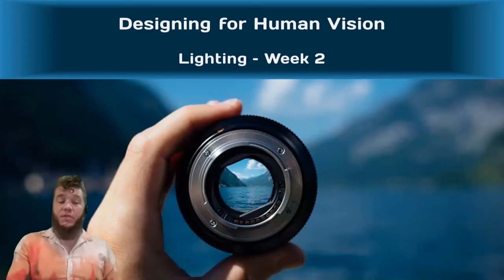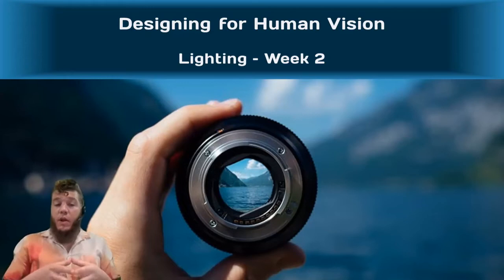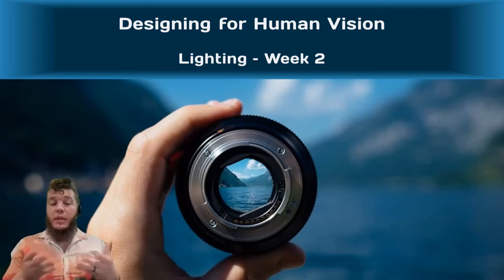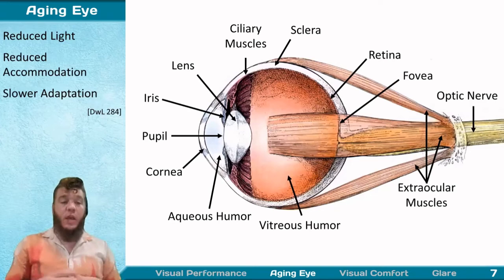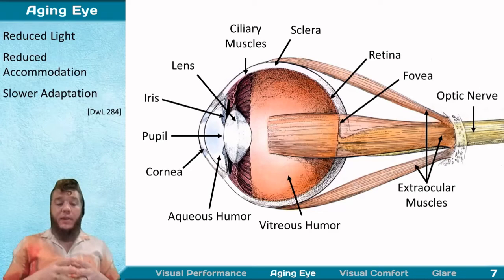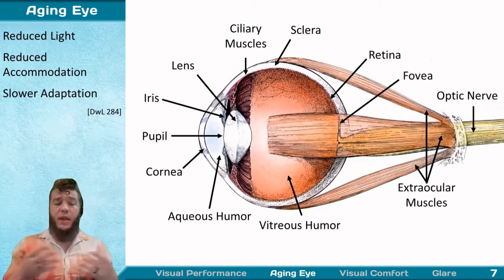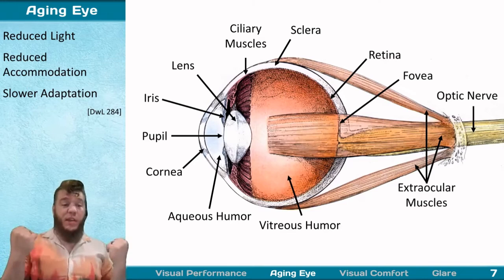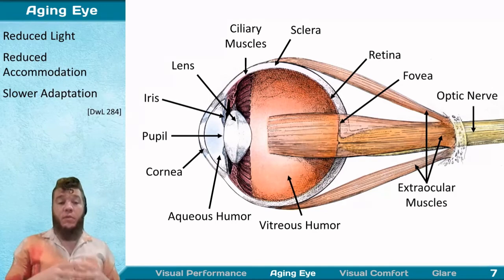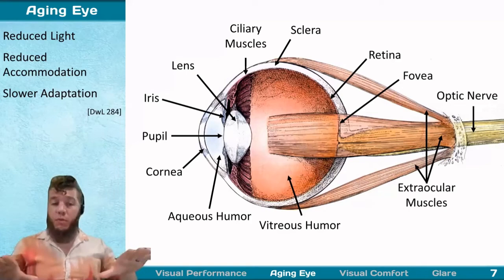Moving on to designing for human vision. There are three major things that drive age-related effects in the eye: reduced light transmission, reduced accommodation, and slower adaptation — all amounting to lower visual acuity as we age. We compensate with more light, higher contrast finishes, and more uniform lighting.